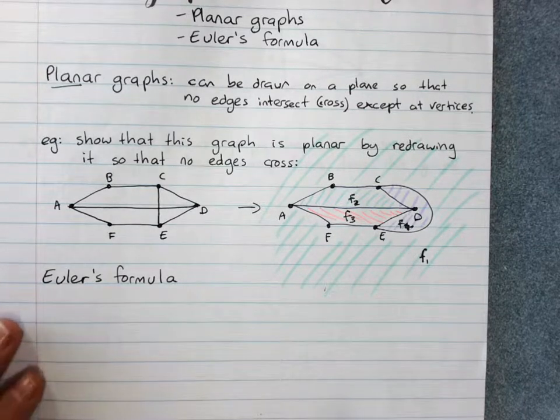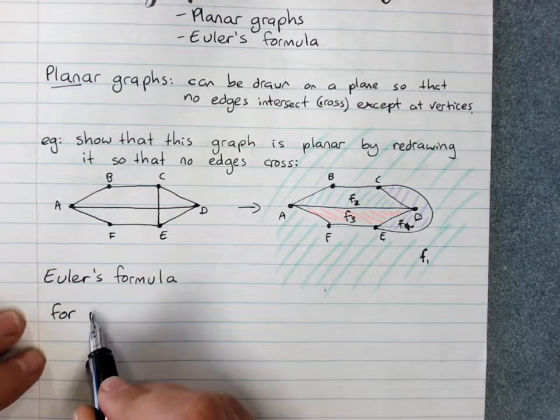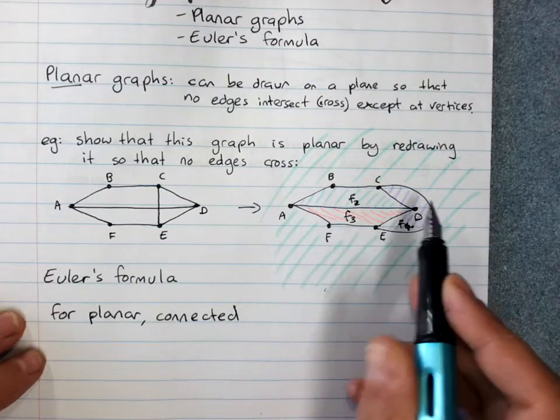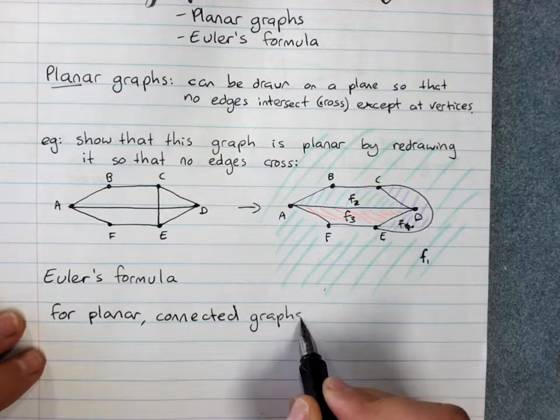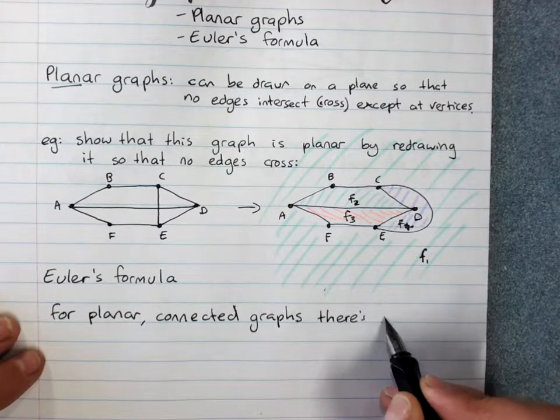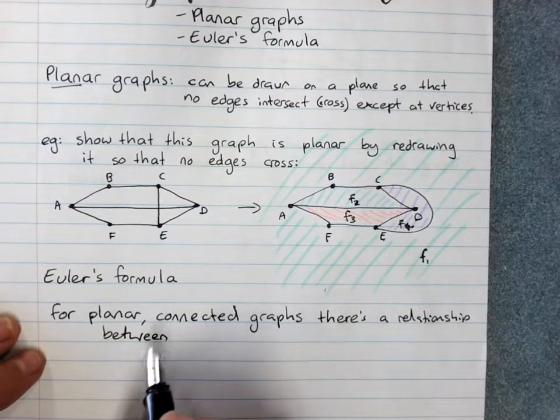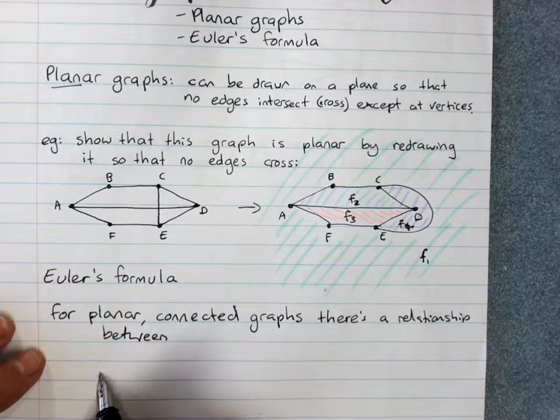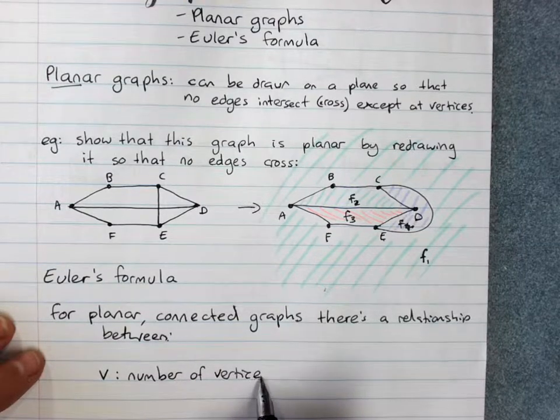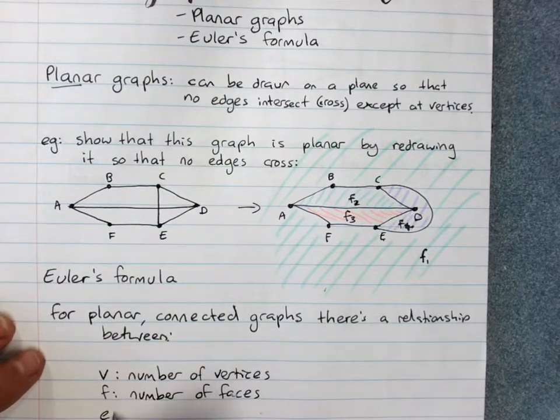So Euler's formula, discovered by Euler, for connected planar graphs. So remember connected means you can get to any vertex from any other vertex. There's a relationship between the number of faces, vertices and edges. And obviously we call V the number of vertices, F the number of faces, and E the number of edges.